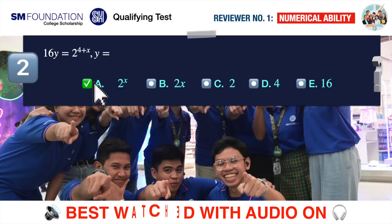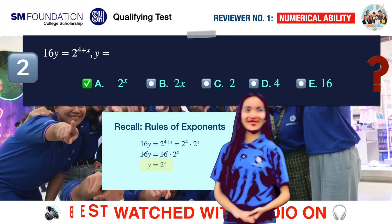The correct answer is A. 2 raised to x. To solve this problem we need to use the rules of exponents. Recall that using the rules of exponents, we can rewrite the given equation as 2 raised to 4 times 2 raised to x. 2 raised to 4 is 16, so our equation now reads as 16y equals 16 times 2 raised to x. From here we can simply cancel out 16 from both sides of the equation, leaving us with y equals 2 raised to x, which is our answer.